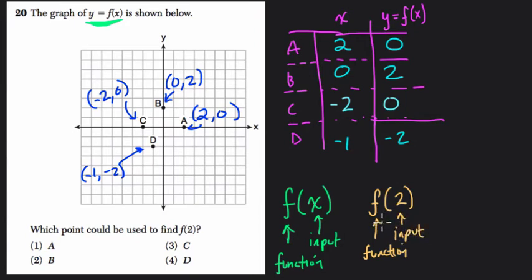So when the input is 2, in other words when the x value is 2, where is this function? And the only point that has that information is point A. If we look at this, point A says that when x is 2, f of x is 0. Because every point is x, y, the first number is x and the second number is y, or f of x. We use those interchangeably. So the answer here is point A.